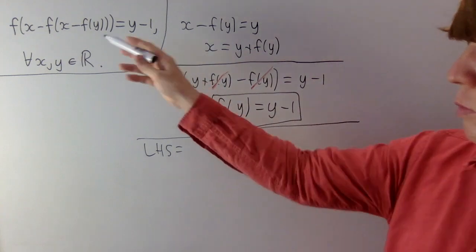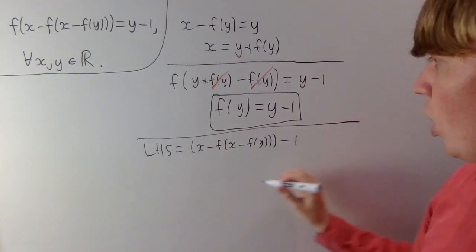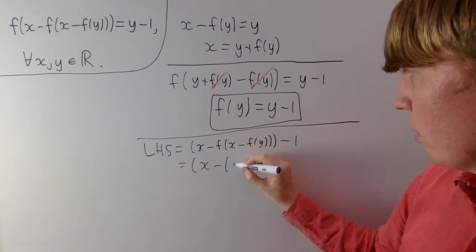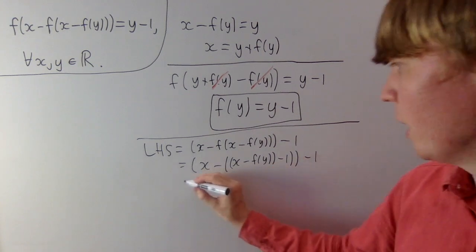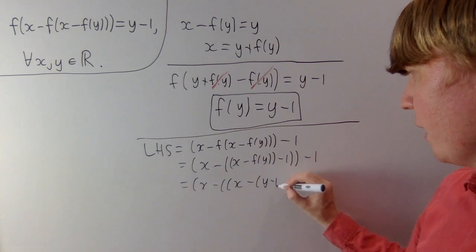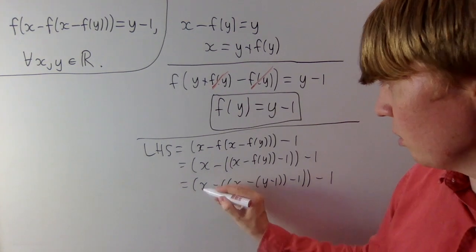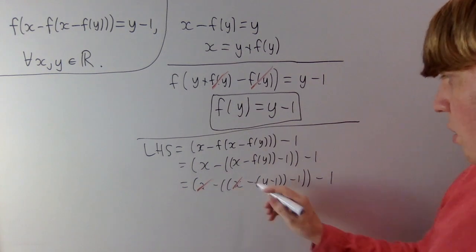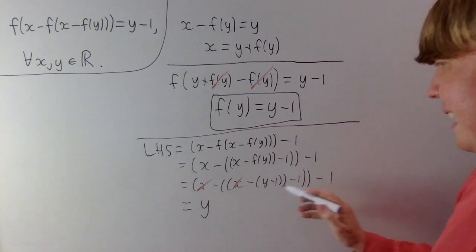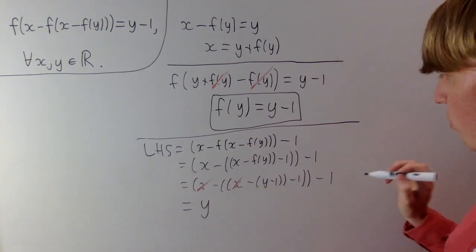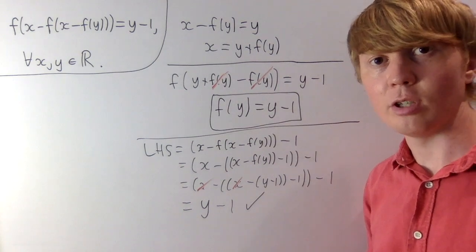The left-hand side — we'll do this step by step because there are a few iterations of the function. So you have x minus f of (x minus f of (y minus 1)). Writing this out: x minus f of (x minus (f(y) minus 1)) minus 1, and replacing f(y) with (y minus 1), then minus 1, with a minus 1 at the end. The x's cancel — you have x and minus x disappearing. You have minus minus y, giving a positive y. Looking at the 1s: minus minus minus 1 gives minus 1, minus minus 1 gives plus 1, and we subtract another 1, so this equals y minus 1. So f(y) equals y minus 1 is the only valid solution.